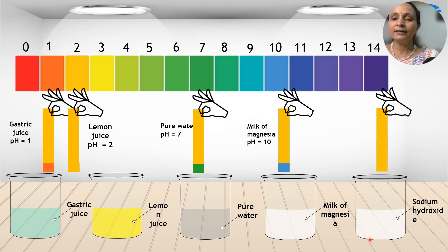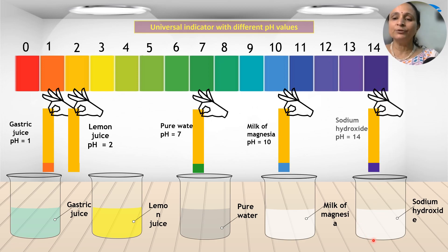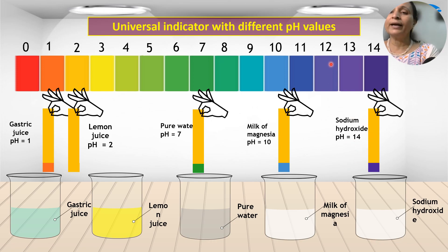Now take sodium hydroxide solution. Repeat the experiment and compare the colors. You get pH of the sodium hydroxide solution to be 14.